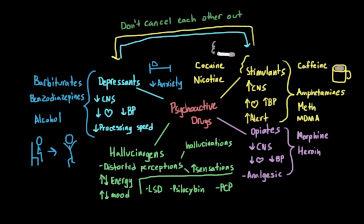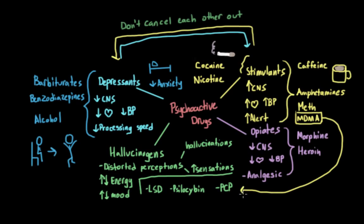So we have four classes of drugs: depressants, stimulants, hallucinogens, and opiates. It might seem that things fit neatly into one category or another, but this is not a perfect system — because we created this system of categorization; nature did not. Not all drugs fit neatly into one category. For example, MDMA or ecstasy was placed in the stimulant category, but it could just as easily belong in the hallucinogen category, since it causes distorted perceptions and heightened sensations.